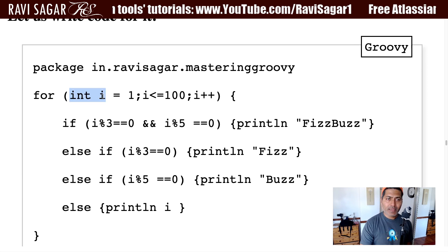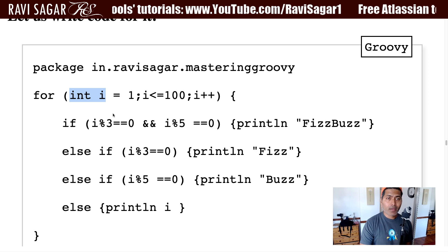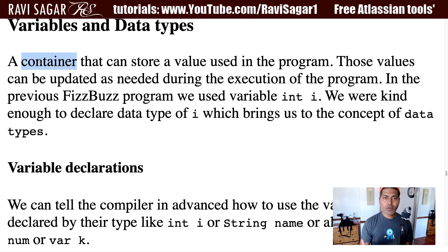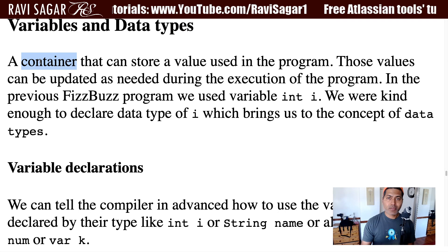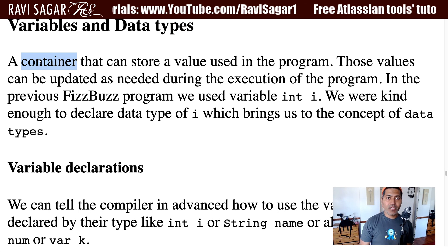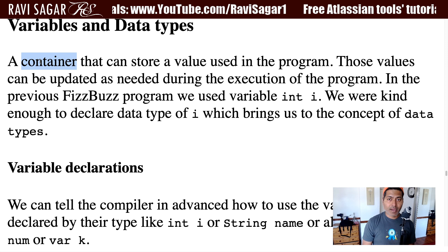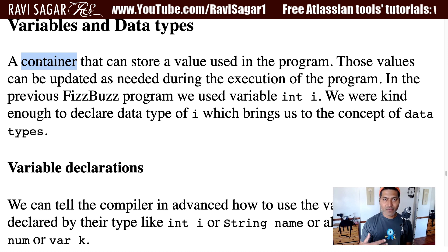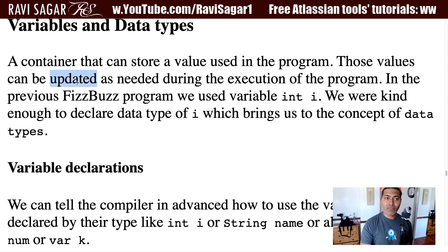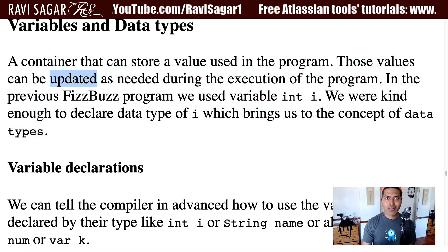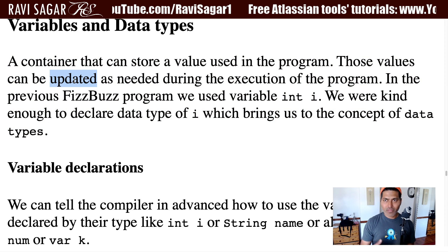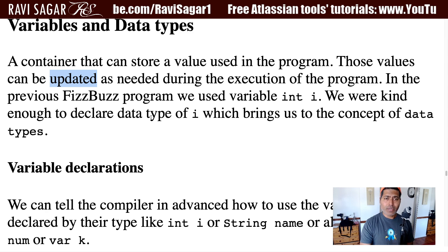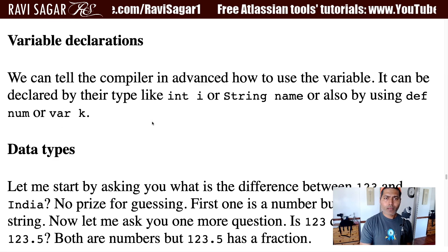We are declaring a variable with a data type. What exactly is a variable? A variable is nothing but a container that will store some value that will be used in the program or in the code. In our example, we were using the variable `i` to keep track of the count of the numbers, and we were actually updating it. Because when you create a variable, in most cases you will be updating it with some temporary value, or maybe you are using it for calculation.